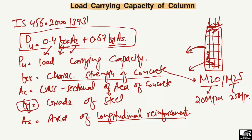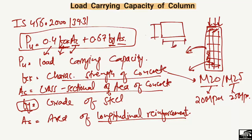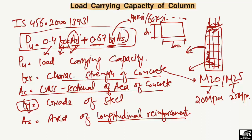AC is the cross-sectional area of the concrete. If we look at the cross-section, it has a width and a depth, so we put those values in as the cross-sectional area. Then we have the addition sign, 0.67, and FY — the grade of steel, such as 40 ksi or 60 ksi.